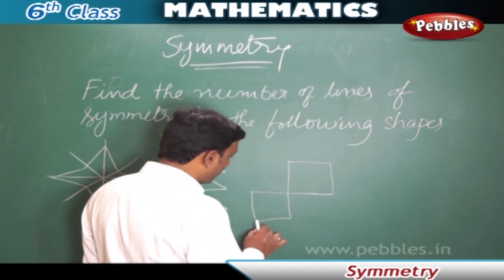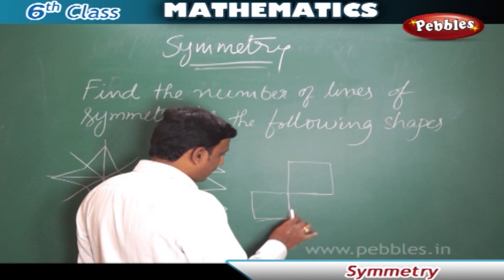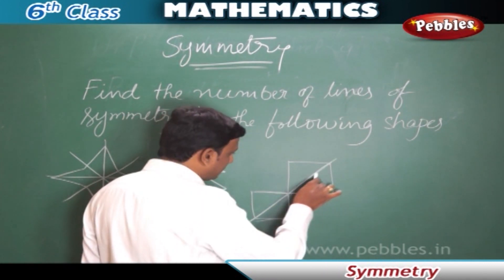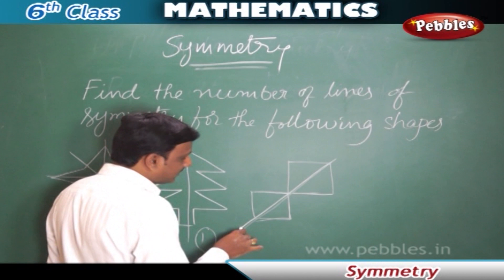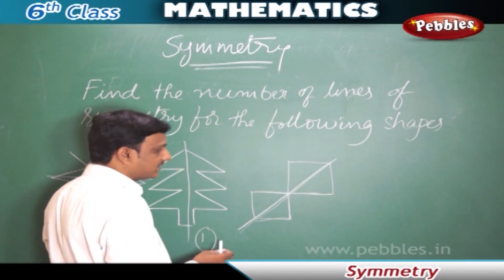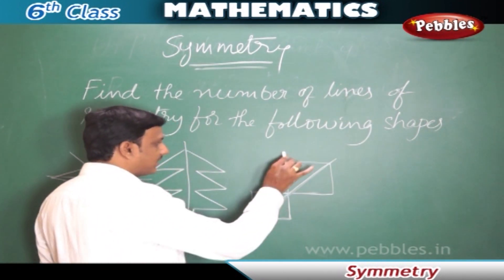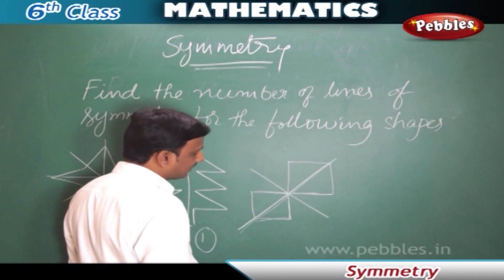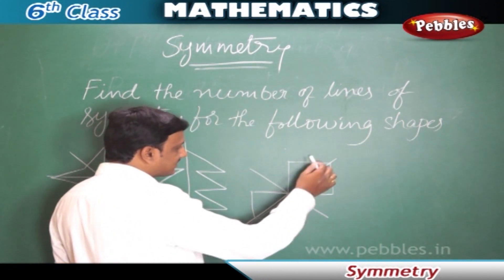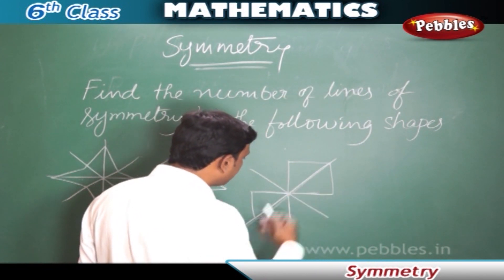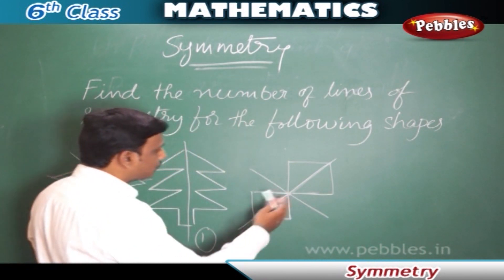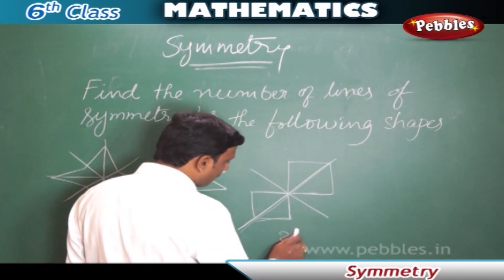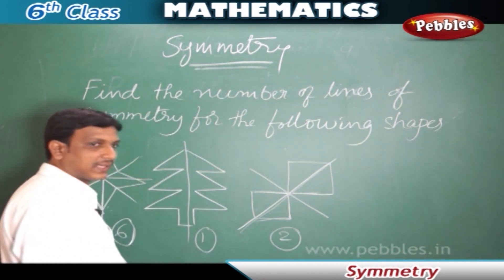And come to this third shape — here two squares are attached. A diagonal line can make the figure into two identical halves, and even the other diagonal fold also makes the two parts of the figure match exactly. So it has got two lines of symmetry.